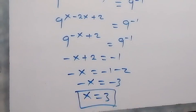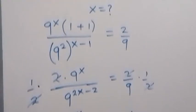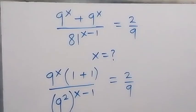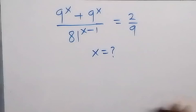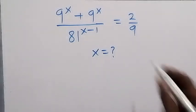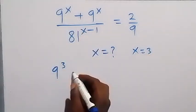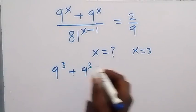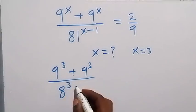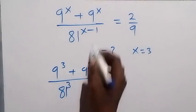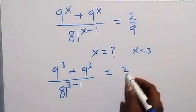To check if this satisfies the given problem, we have x equals 3. Let's substitute: that will be 9 raised to power 3 plus 9 raised to power 3, divided by 81 raised to power 3 minus 1, which is 81 raised to power 2. Is it equals to 2 over 9?